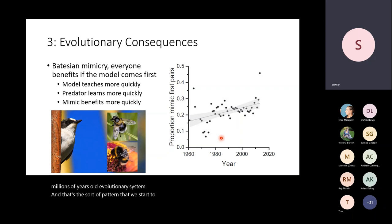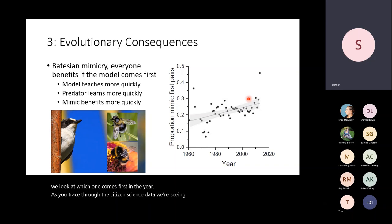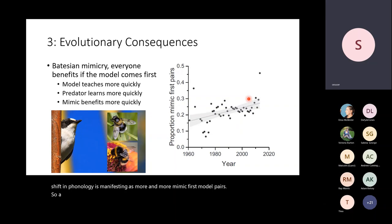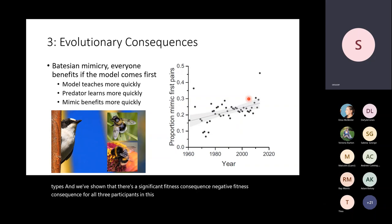We have a potential situation where our mimics might be jumping the gun — getting out in front of their models and disrupting this millions-of-years-old evolutionary system. That's the pattern we start to see when we pair stinging Hymenoptera with their Batesian hoverfly mimics: tracing through citizen science data, there's a gradual trend where the hoverfly phenological shift manifests as more and more mimic-first, model-second pairs. We've also been doing psychological experiments using humans as a model system to understand how people cognitively try to differentiate between different insect types, showing a significant negative fitness consequence for all three participants in this relationship under environmental change.